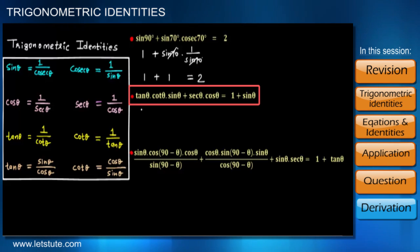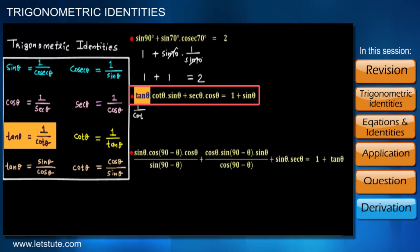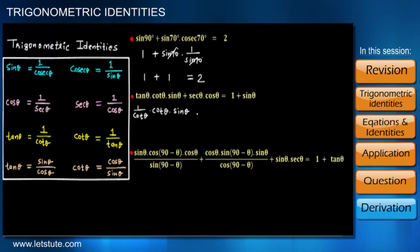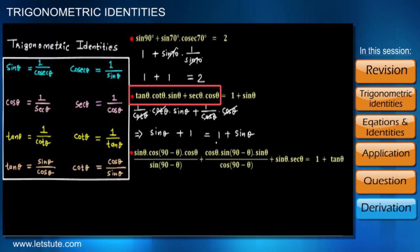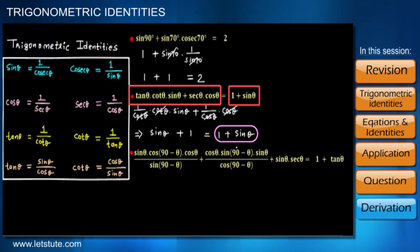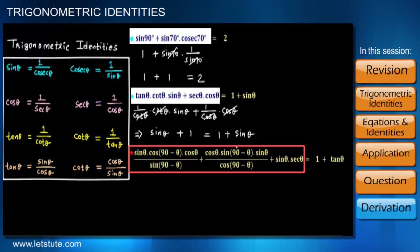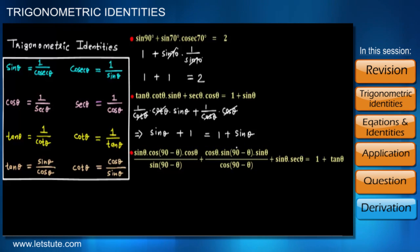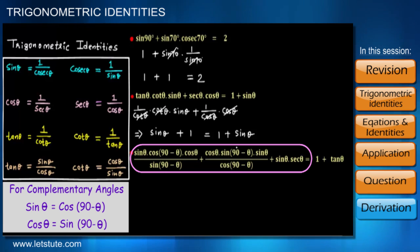In the next question, we can write tan as 1 upon cot. We keep sine theta as it is because our final answer should look like the right hand side expression, which is 1 plus sine theta. We can also write sec in terms of cos. For the third question, even though it looks bigger, we can see sin(90 − θ) and cos(90 − θ), so let's use the concept of complementary angles to write everything in the form of sin theta and cos theta.